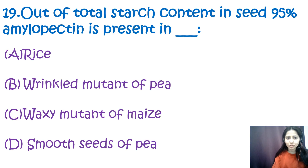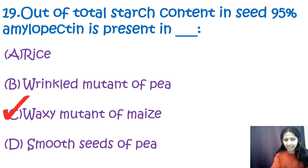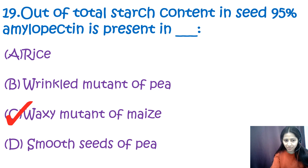Question 19: Out of the total starch content in seed, 95% amylopectin is present in — rice, beef wrinkled mutant of pea, waxy mutant of maize, or smooth seeds of pea? The correct option is C — waxy mutant of maize. Out of total starch content in a seed, 95% of amylopectin is present in the waxy mutant of maize.